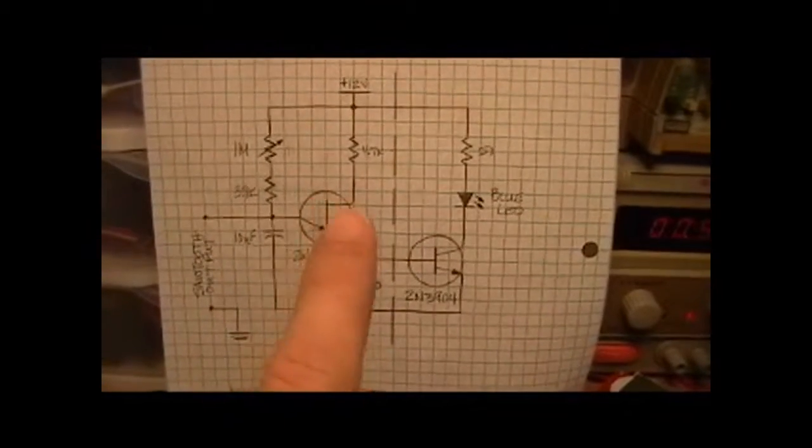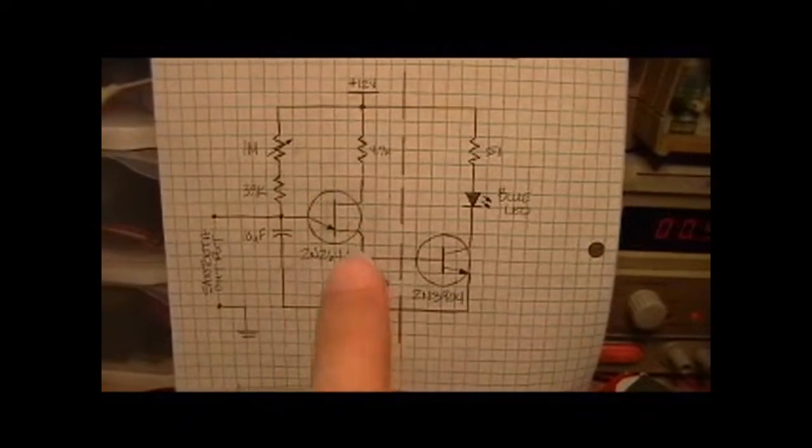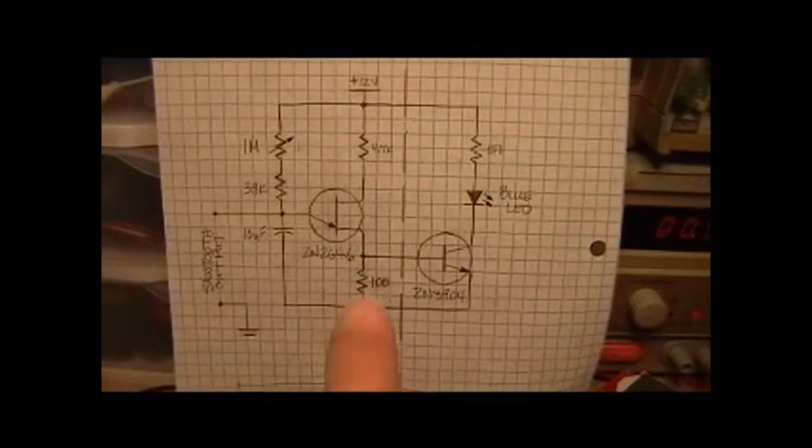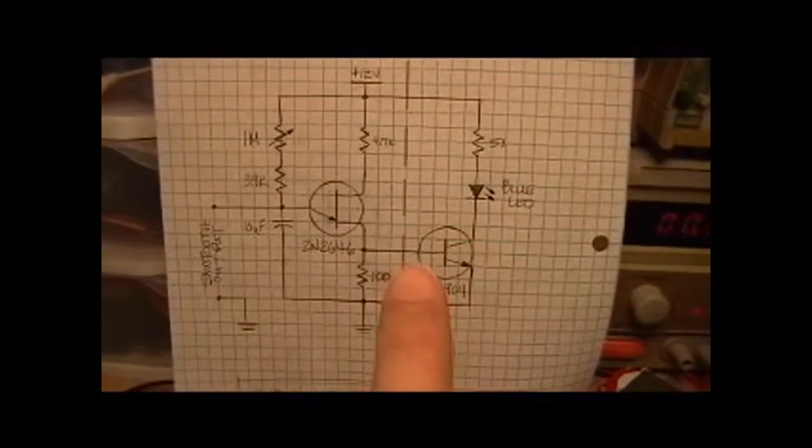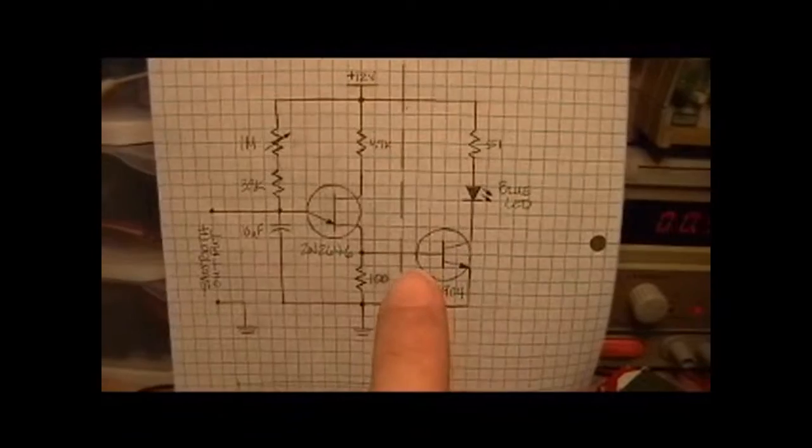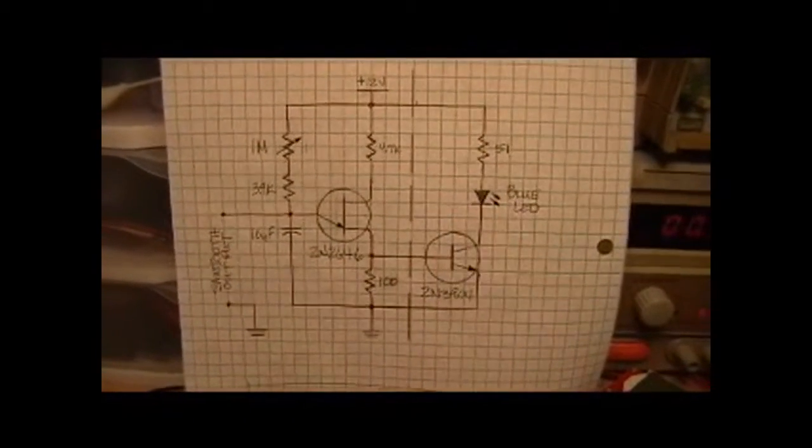it will turn this transistor on, which will cause it to quickly discharge the cap through this other resistor to ground. And at the same time, it will temporarily turn on this little NPN transistor, which will cause our LED to flash.